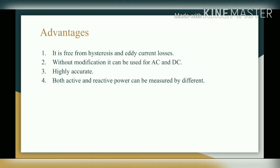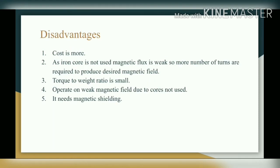Advantages: first, it is free from hysteresis and eddy current losses; second, without modification it can be used for both AC and DC; third, it is highly accurate; fourth, both active and reactive power can be measured by this wattmeter. Disadvantages: first, cost is more; second, as an iron core is not used, the magnetic flux is weak, so more turns are required to produce the desired magnetic field; third, torque to weight ratio is small; fourth, it operates on a weak magnetic field; fifth, it needs magnetic shielding.